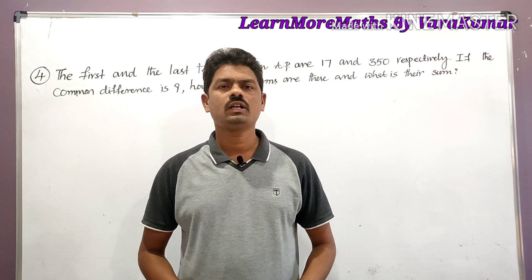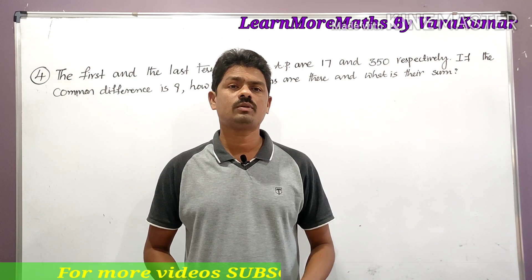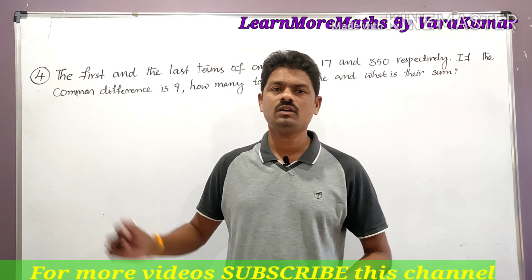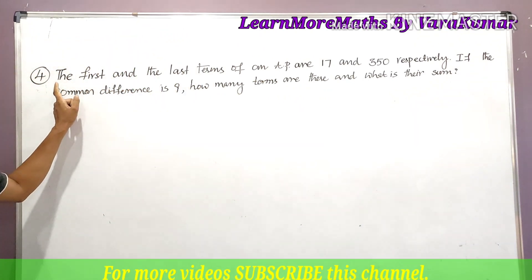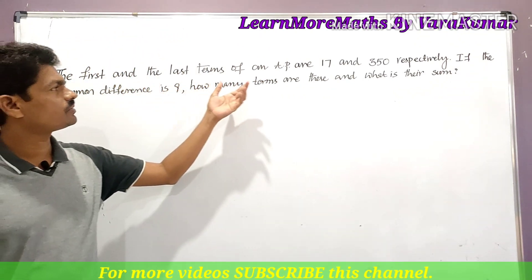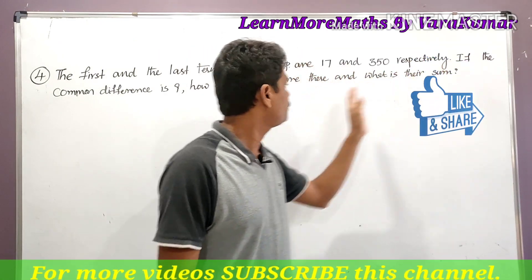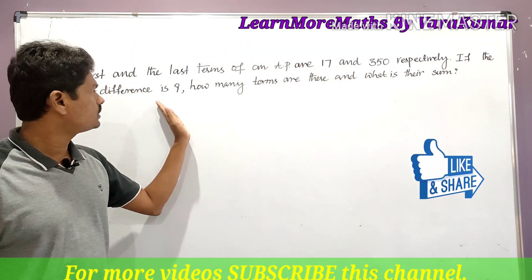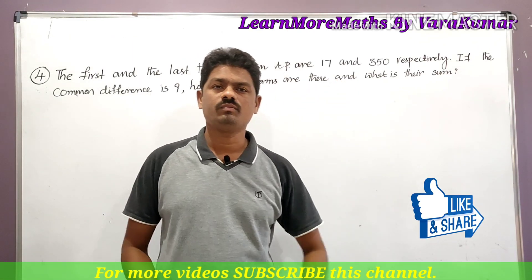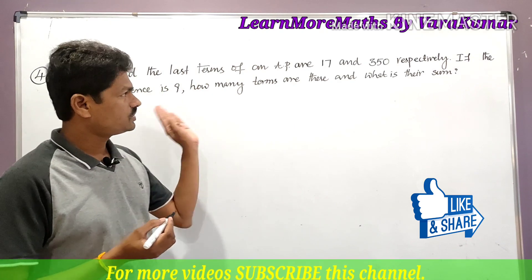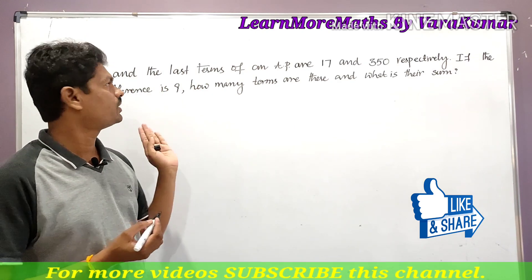Hello students, welcome to my channel 'Learn More Math' by RFMR. Today we are going to solve some problems from the chapter Progressions, exercise 6.3. The fourth problem states: the first and last terms of an arithmetic progression are 17 and 350 respectively. If the common difference is 9, how many terms are there and what is their sum?